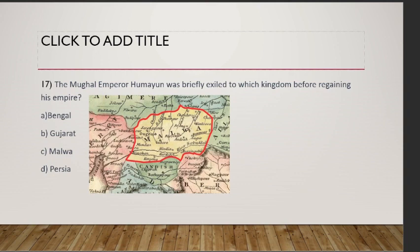The Mughal emperor who was briefly exiled before regaining his empire — he was exiled for some time. Where was he? He was in Malwa at that time.